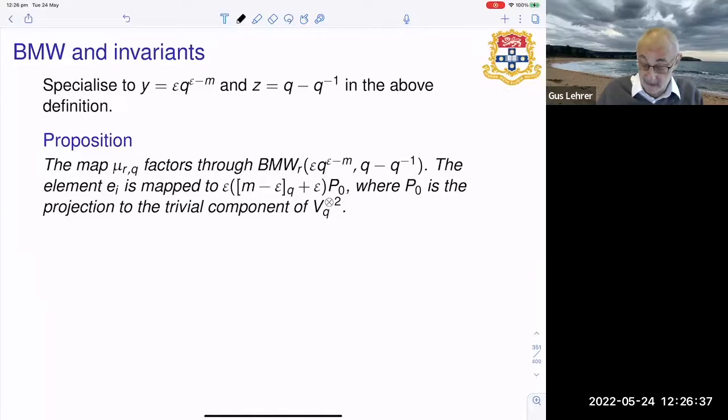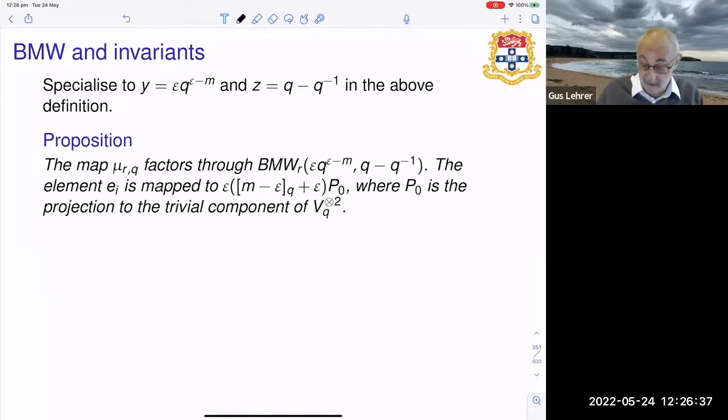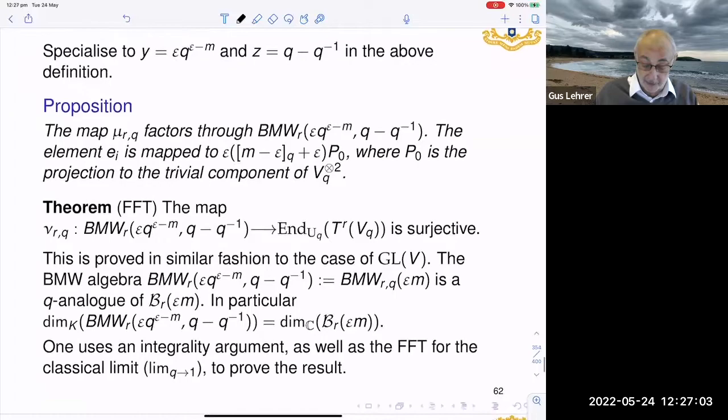We just specialize the parameters to our case, and the result is that there is the homomorphism from this BMW algebra to endomorphisms of tensor space. And there are other properties of this. And the first fundamental theorem is that this is surjective. Now once again this is proved by a localization argument. It's not very difficult. And one gets something which is completely analogous to the classical case.